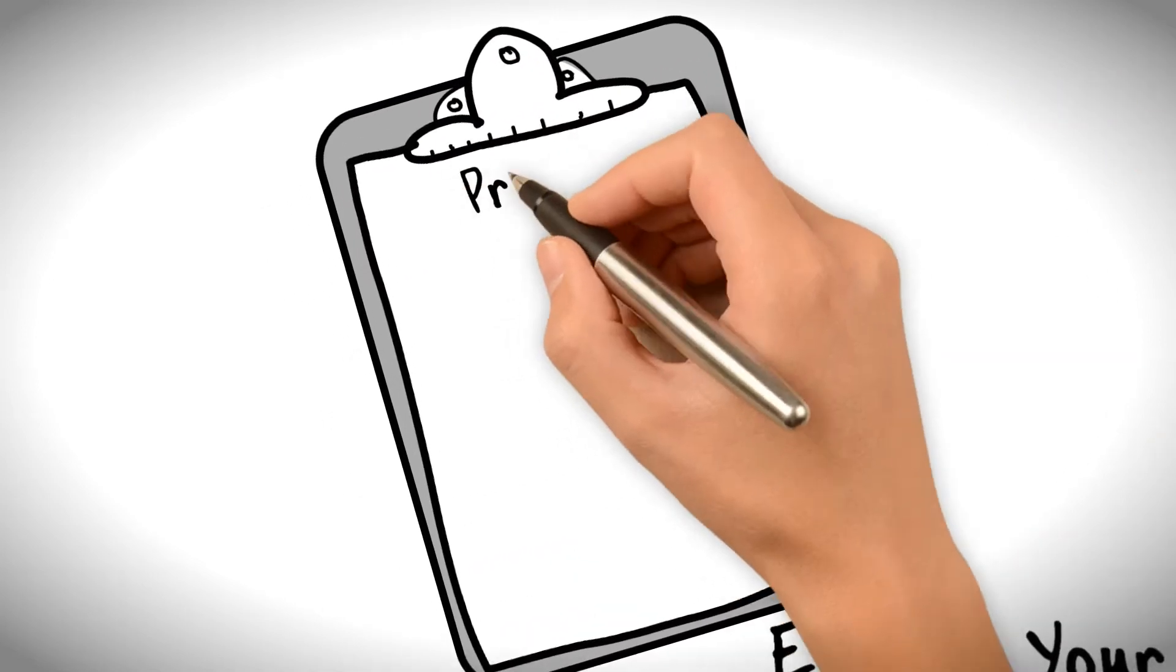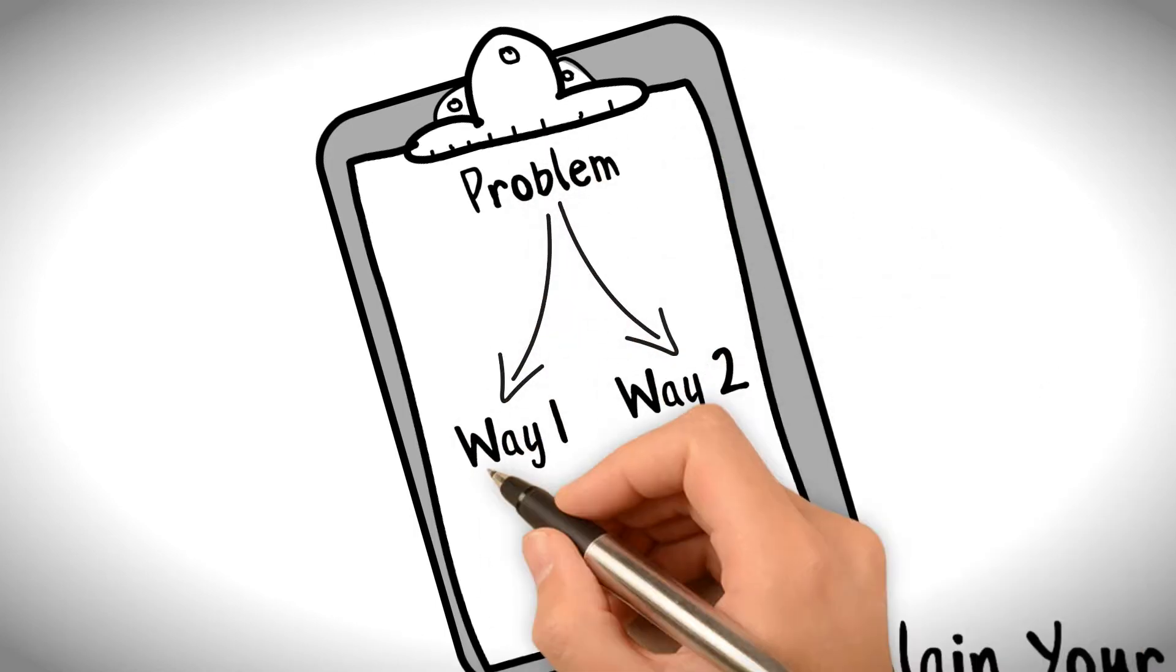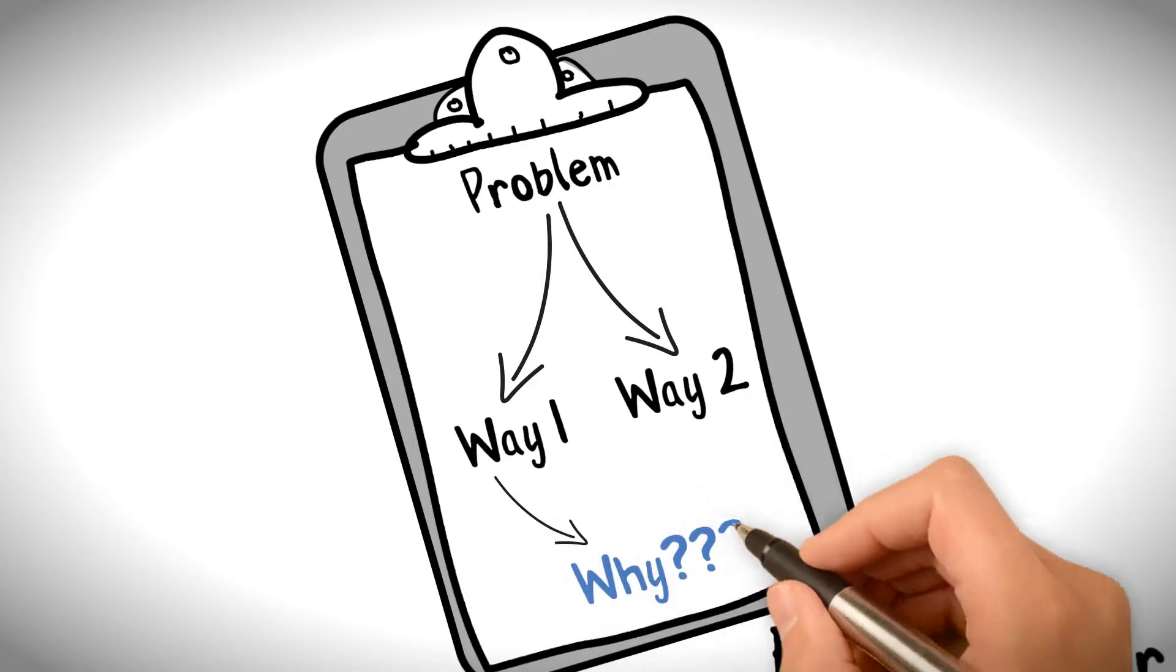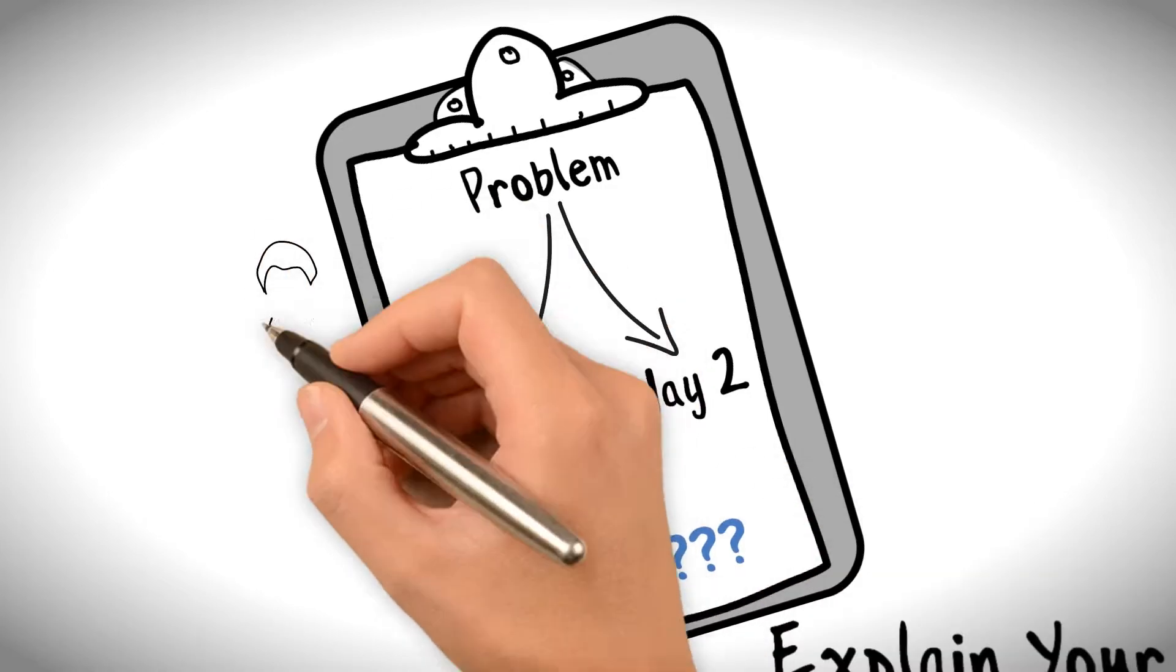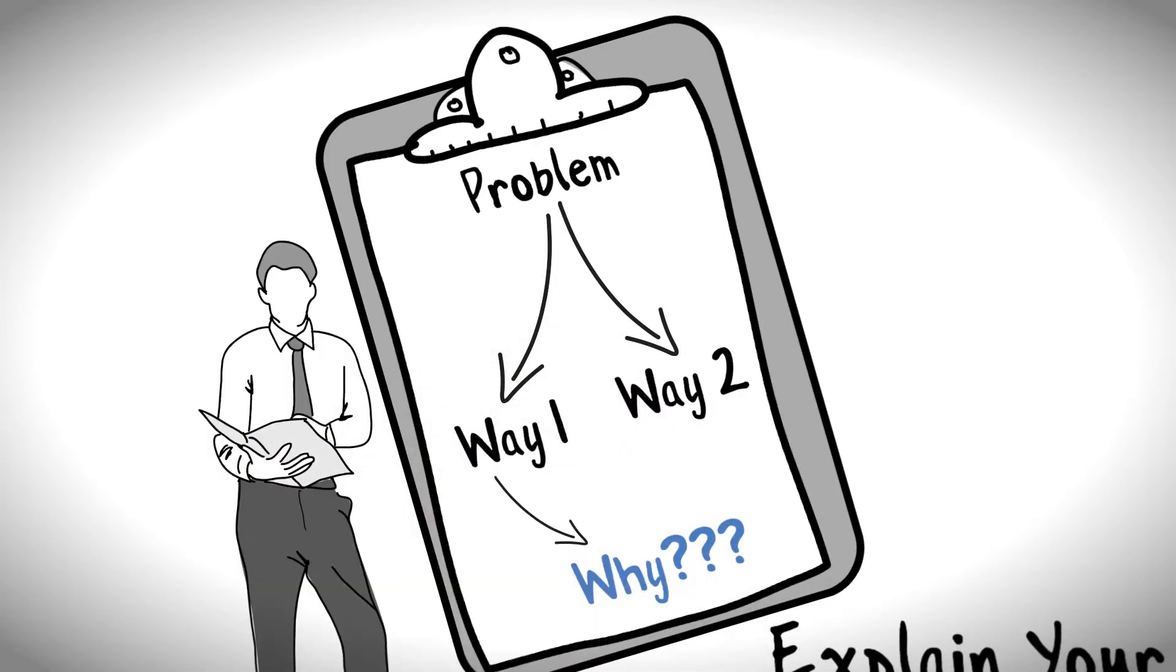The correct way to do it is by explaining them in what possible ways the problem can be solved. Why and by which approach you will solve the problem. If there is something wrong with your approach, then interviewers will provide you feedback about it or clarify the question again.